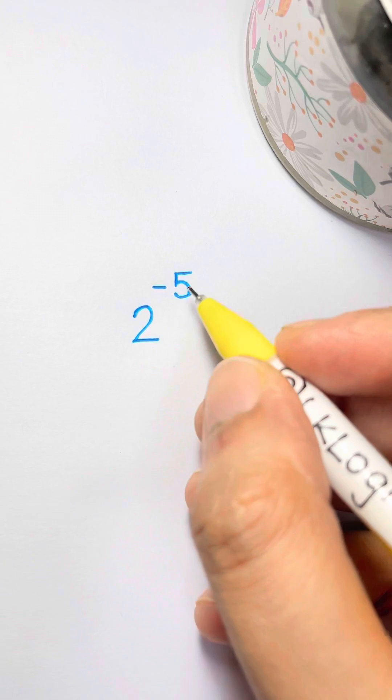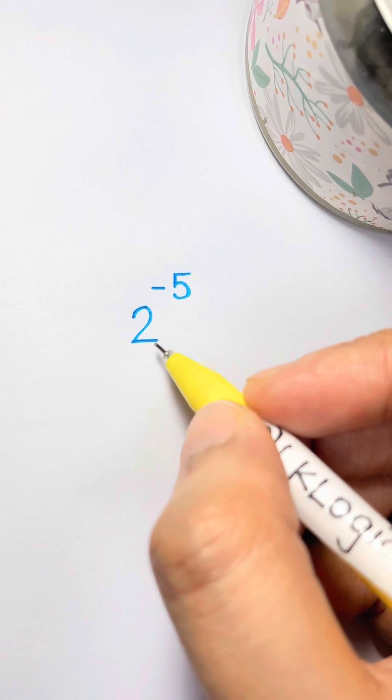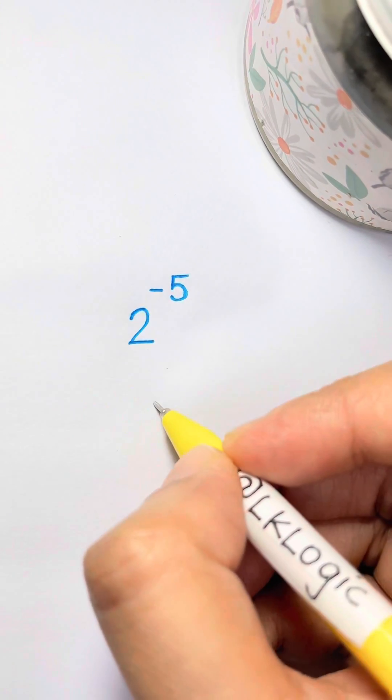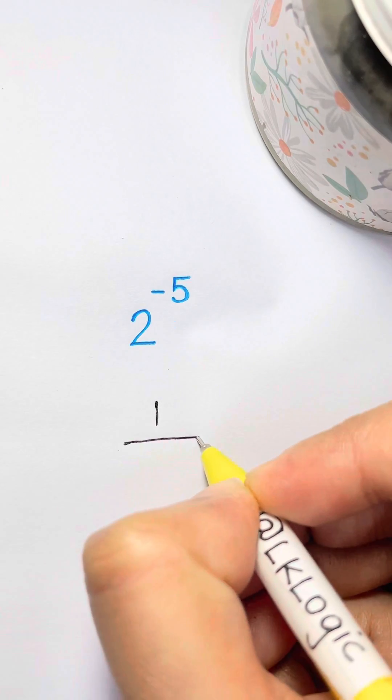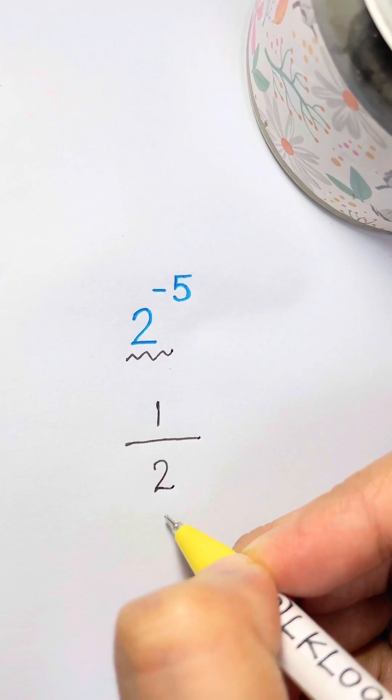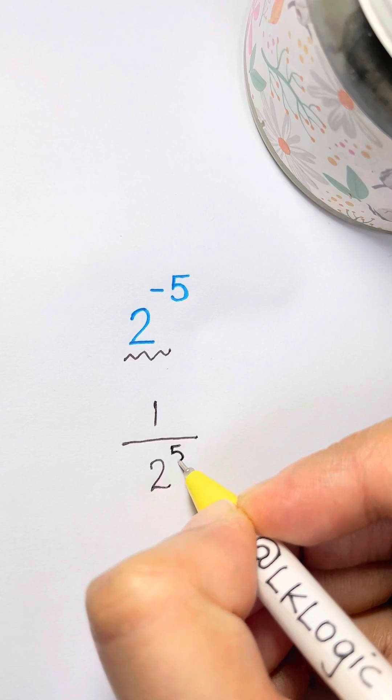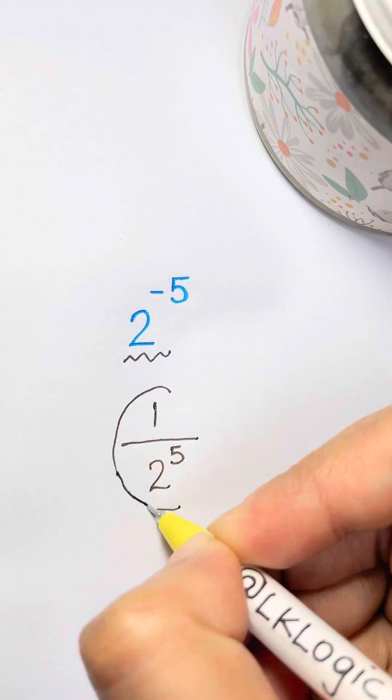Lastly, whenever you see a negative exponent you want to make that positive. So what you're gonna do is write 1 over your base which is 2 here and make your exponent positive. And you're done.